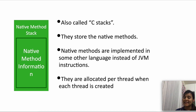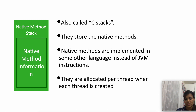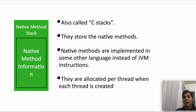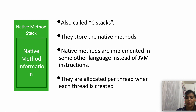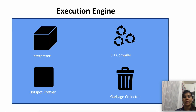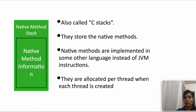The native method stack stores the native methods — those are methods implemented in some other language instead of JVM instructions, and mostly that language is C. That's why they are also called C stacks. These native methods help the JVM to execute some instructions that it cannot handle on its own, such as integrating with legacy code. Such methods written in C are placed in the native method stack and are also allocated per thread when each thread is created.